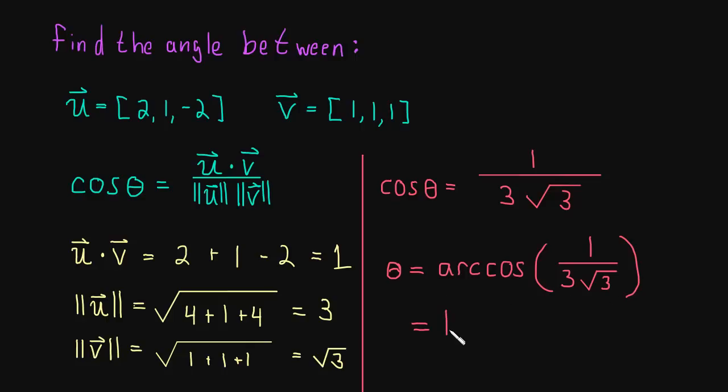And this comes out to 1.37 radians, or I should write this is approximately equal, rounding a little bit or truncating. This is approximately equal to 1.37 radians, and if your calculator is in degree mode, then that's approximately 78.9 degrees.